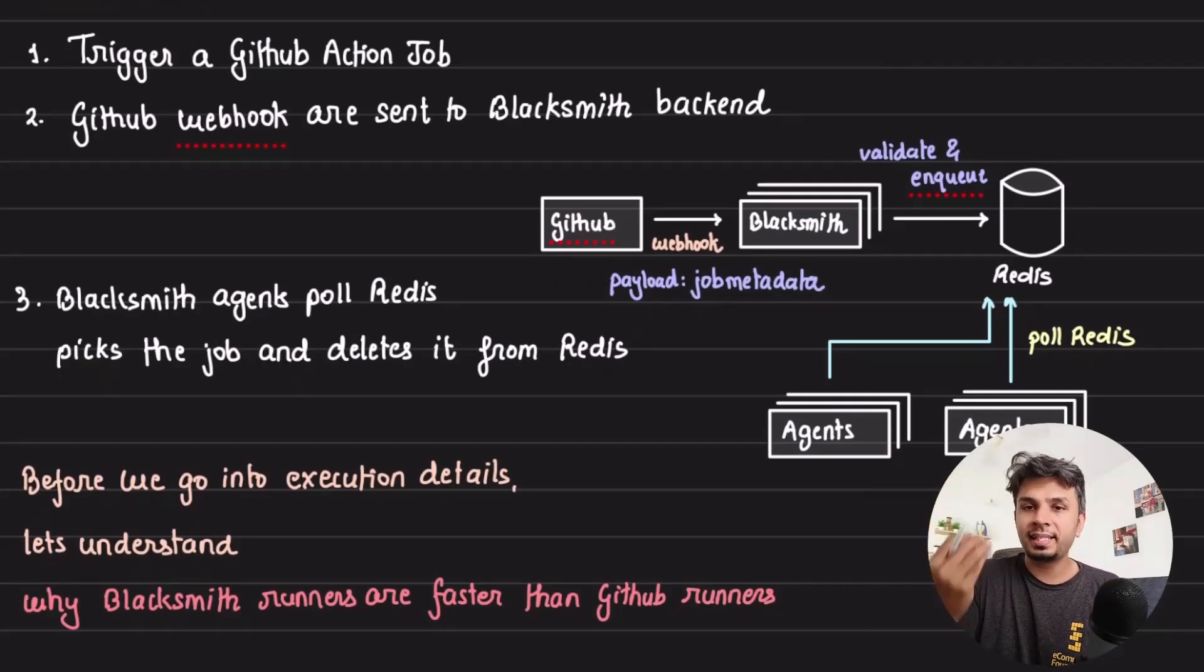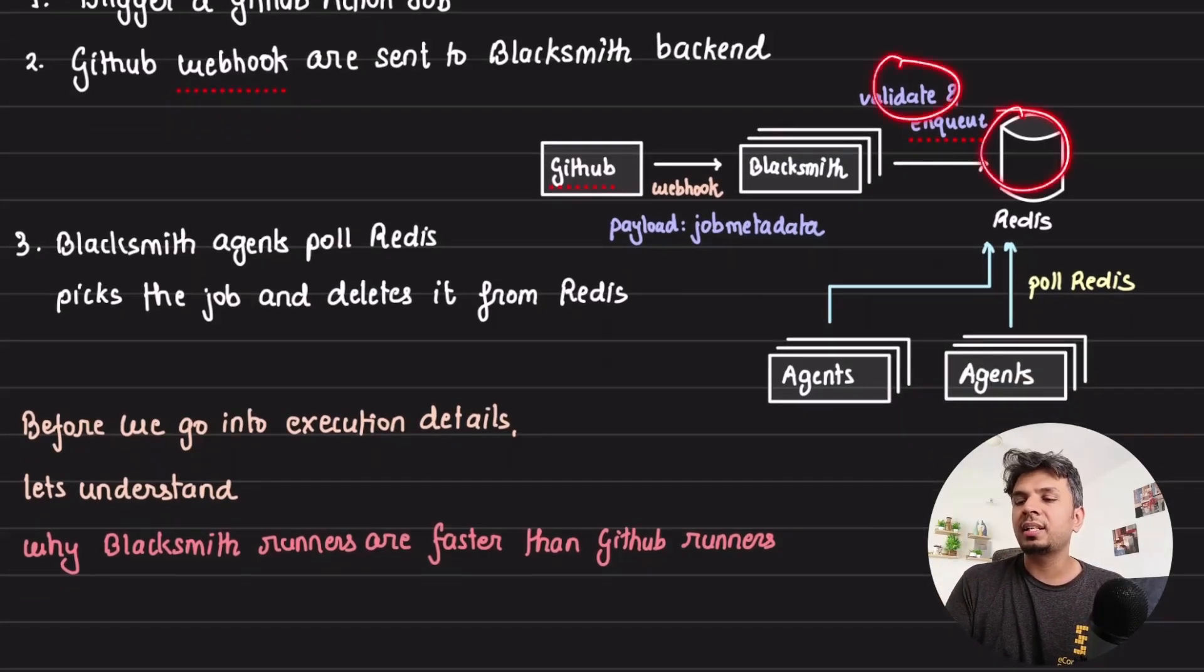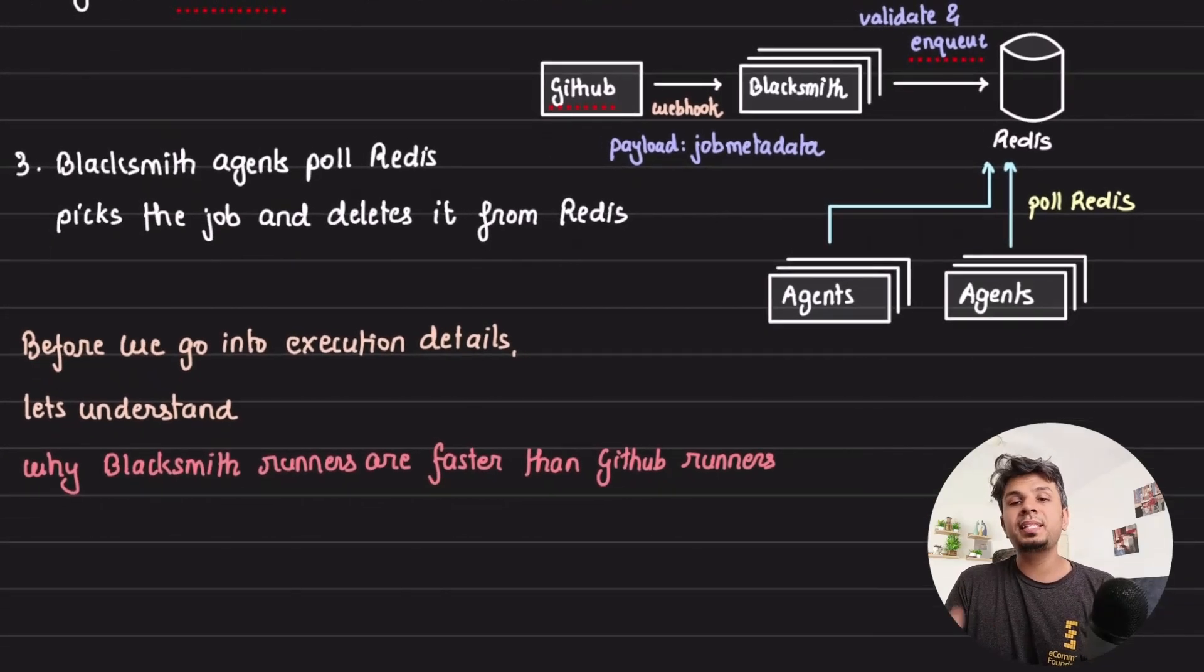Once Blacksmith's backend receives the job, it extracts the payload, from that it gets the job metadata, it validates it and enqueues it in Redis. Now from here, the Blacksmith agents take over which continuously poll Redis to pick the job to be executed.